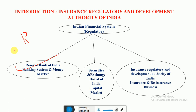The second regulator is SEBI — the Securities and Exchange Board of India — which is the regulator of the Indian capital market. The capital market is where long-term securities are traded. SEBI acts as an autonomous statutory body that looks after the functioning of capital markets.